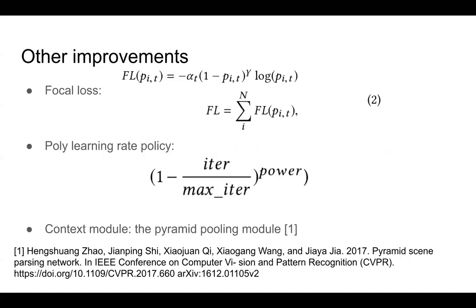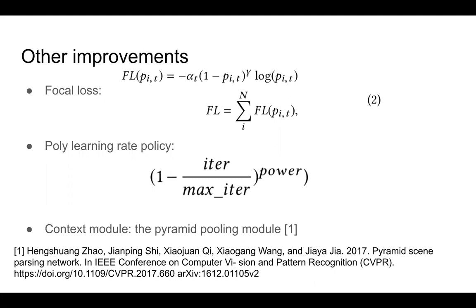Other improvements to our model include using focal loss, using a cyclic learning rate which helps reduce the number of iterations, and context modules without learnable parameters, giving the model fewer parameters and enabling more stable learning.